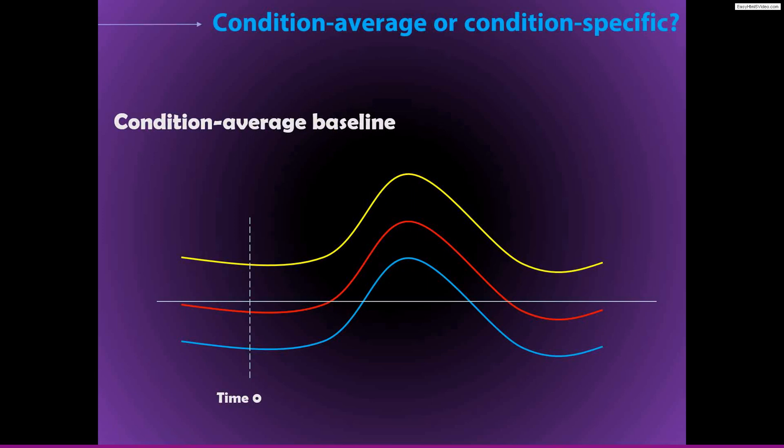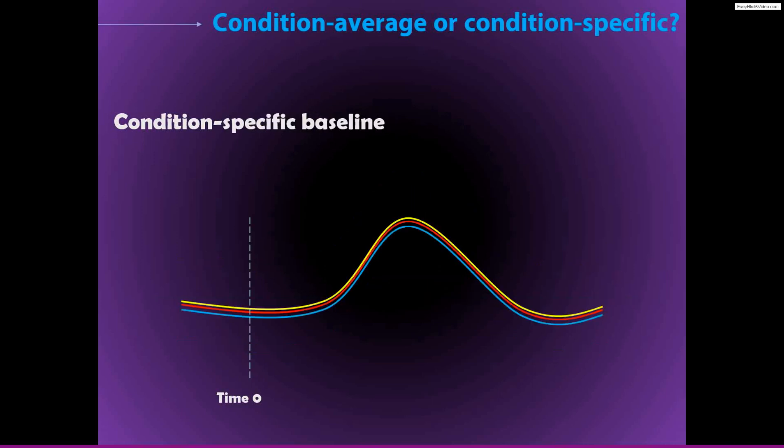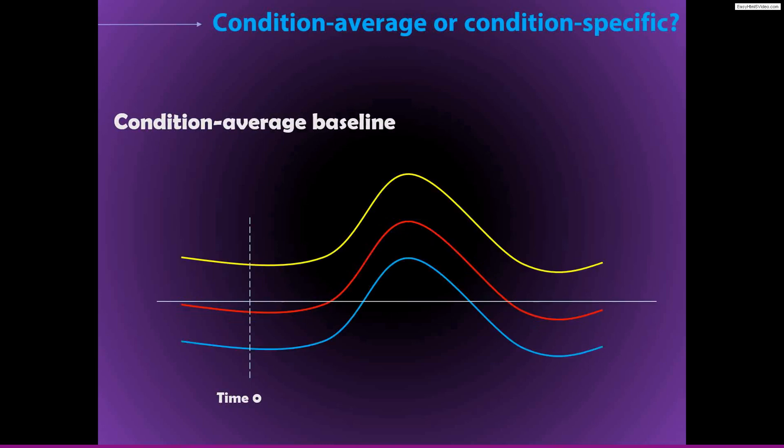But of course, that said, there are situations, there's always some experimental design where the condition average baseline doesn't really make sense and the condition specific baseline does make more sense. Again, there's no right or wrong answer here, but it's important for you to think about this issue. This really has non trivial implications for the kinds of interpretations of your results that you will make. And yeah, so it's something that you should think about very carefully. But yeah, I guess. OK, I have nothing else to say that I haven't already said. Thanks everyone.